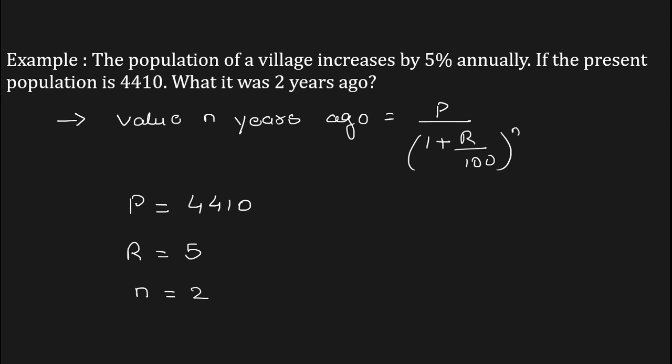Since we have the value of P, R, and n, substitute them in the formula. That is 4410 upon (1 plus 5/100) to the power of n, that is equal to 2.